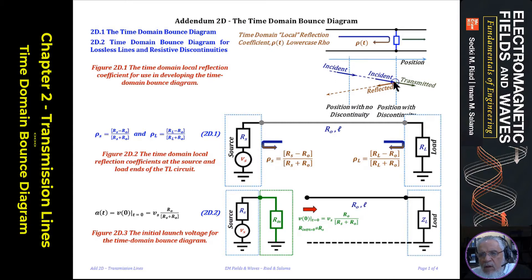It hits the source-end discontinuity and reflects again, this time modified by ρ sub S, since that's the reflection coefficient at the source end. So the wave is now ρ sub S times ρ sub L times A of T minus 2 tau. It then goes back toward the load with another tau delay, gets another ρ sub L reflection, comes back to the source with yet another tau delay, gets another ρ sub S reflection, and so on and so forth — we can follow this back and forth indefinitely.